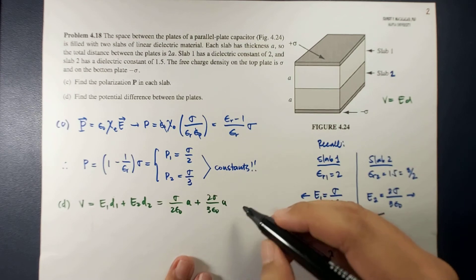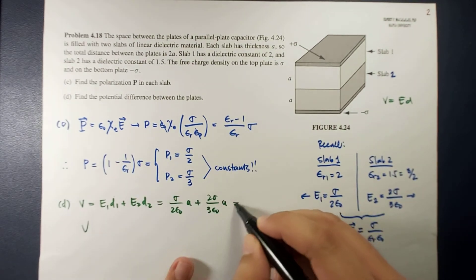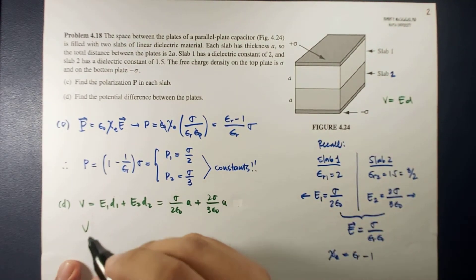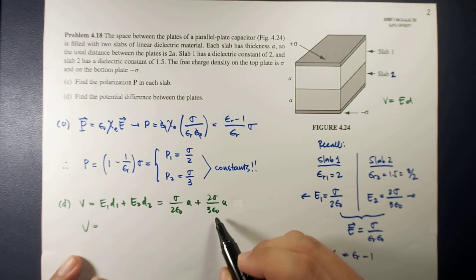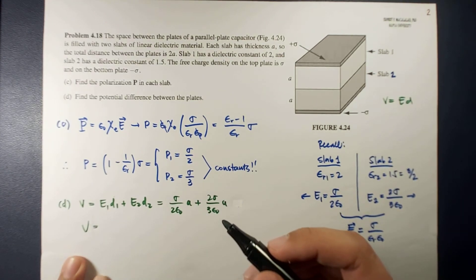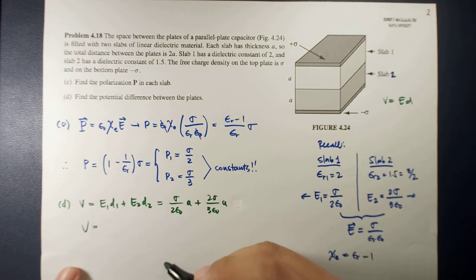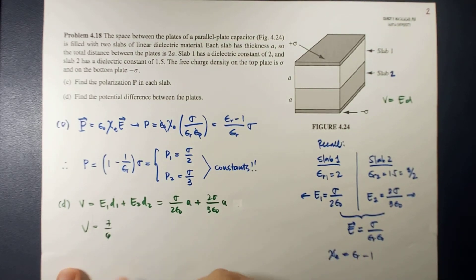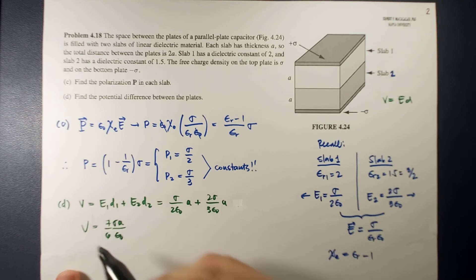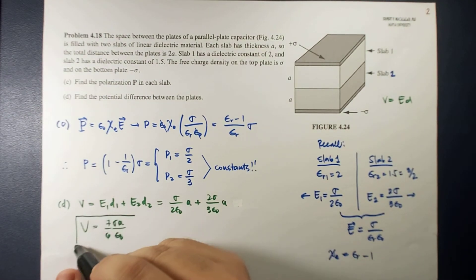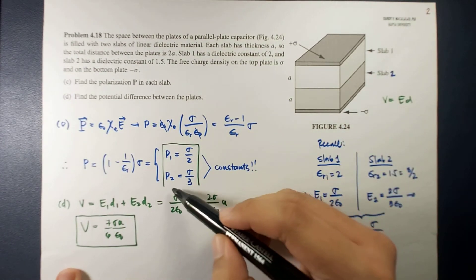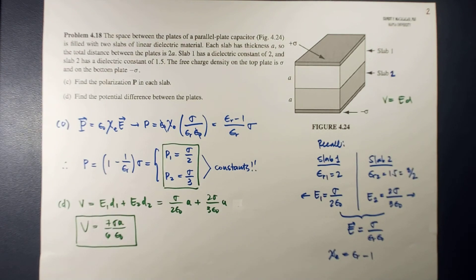Substituting, we get σ/(2ε₀) times A plus 2σ/(3ε₀) times A. Factoring out σA/ε₀, the potential difference equals σA/ε₀ times (1/2 plus 2/3), which equals 7/6. So the potential difference between the plates is 7σA/(6ε₀).